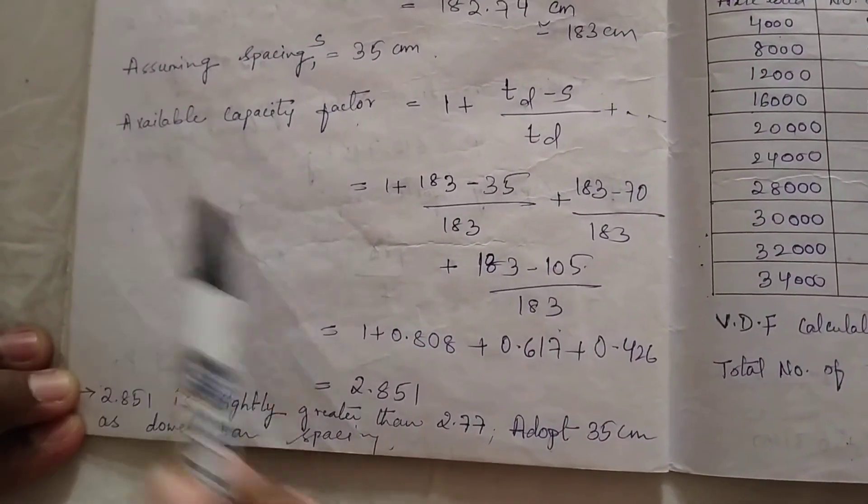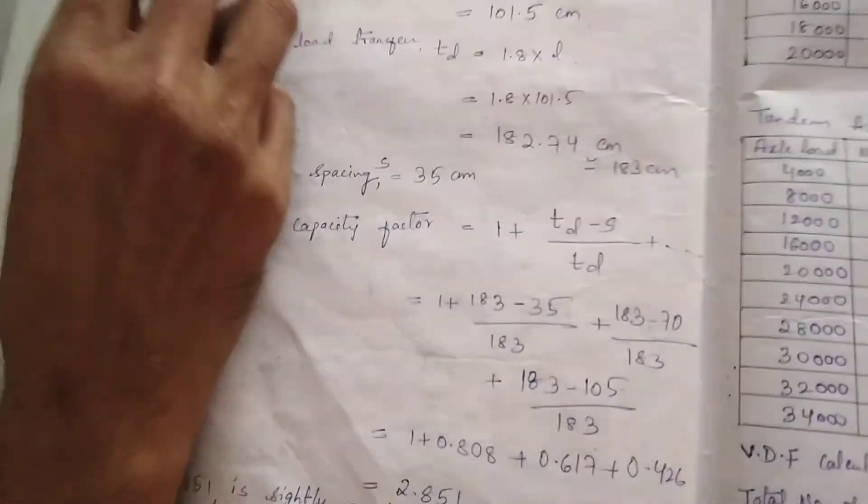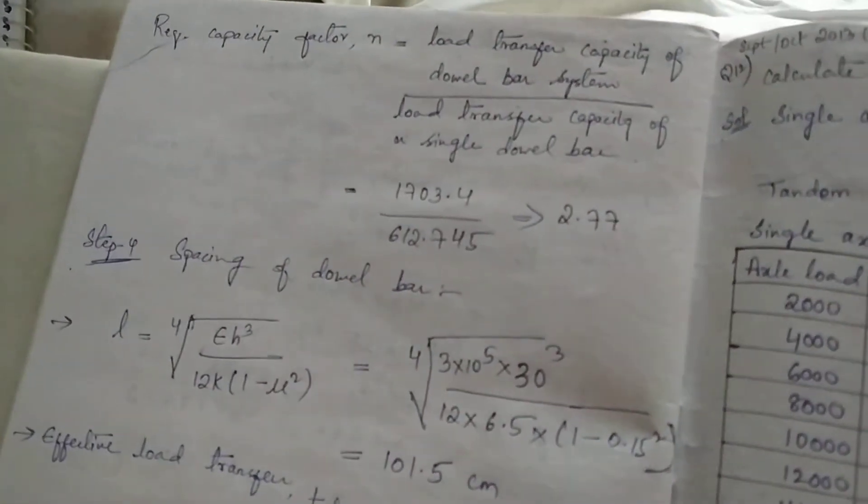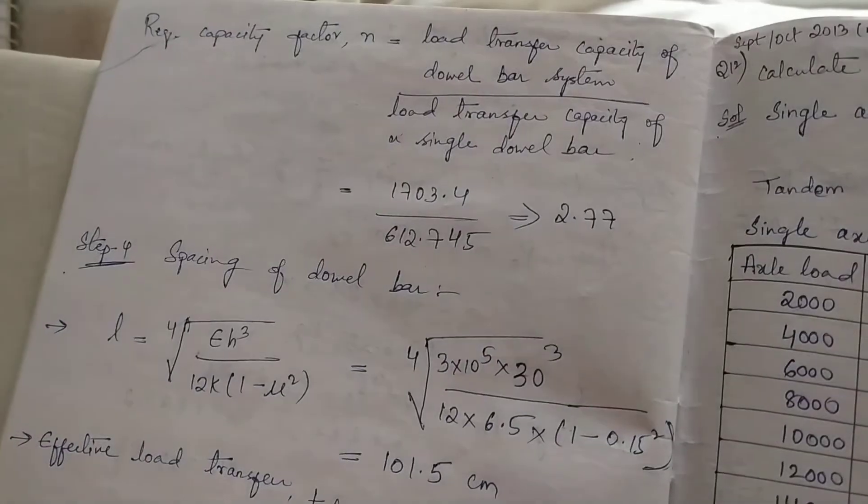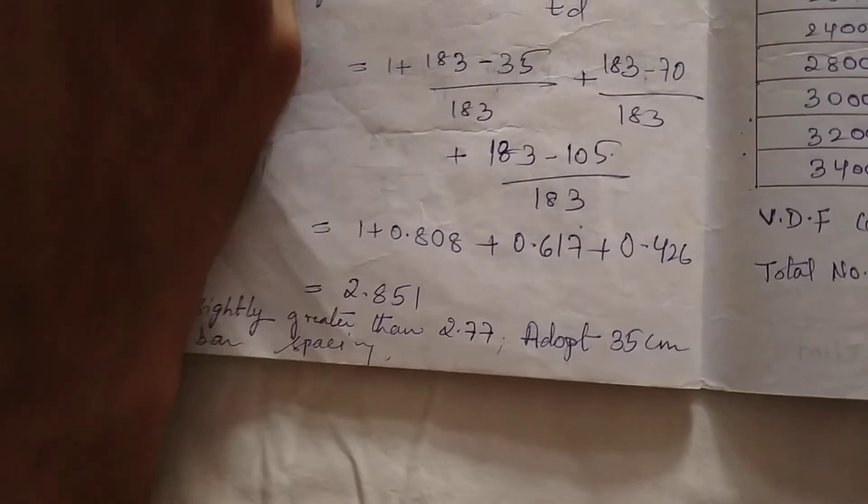After getting this, one important point is we have to check the value of available capacity factor with the required capacity factor. Available capacity factor should be more than the required capacity factor.